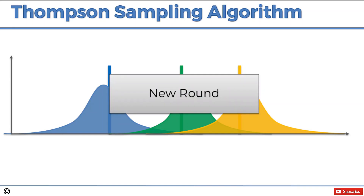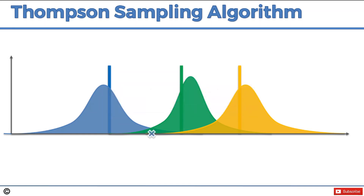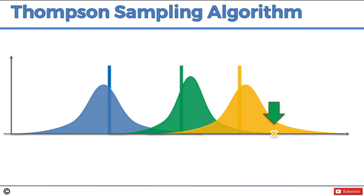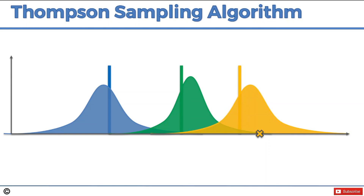Now a new round begins and we do the same thing again. We pick values out of our distributions to generate a new bandit configuration in our virtual reality. Out of the three, we pick the best bandit — the yellow one — and pull the yellow machine's lever in the real world. That triggers the distribution behind the yellow machine, giving us a real-world value. We incorporate that value into our perception of the world, which adjusts accordingly.